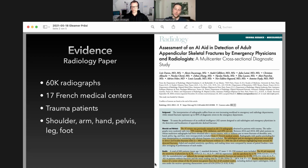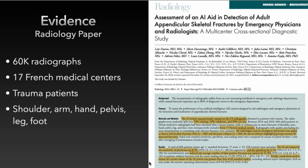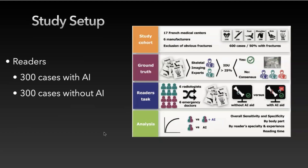On the right side is the paper recently published in the Radiology Journal. This is a really interesting publication because they offered a lot of detail on how the algorithm actually works. They took training data from 60,000 radiographs acquired at 17 French medical centers with trauma patients, including images from shoulder, arm, hand, pelvis, leg, and foot. This dataset was split into training, validation, and test sets. In this particular study, they also had a study dataset with additional data shown to six radiologists plus six emergency doctors — 12 readers in total.